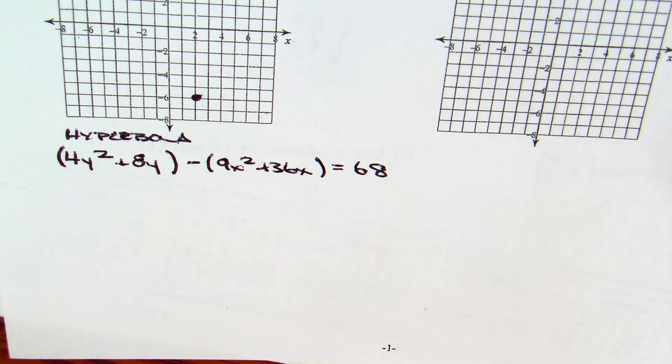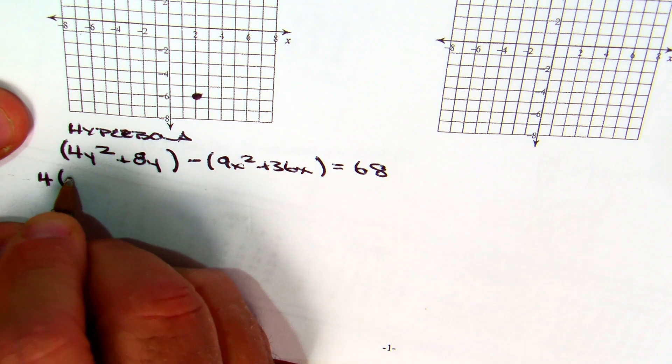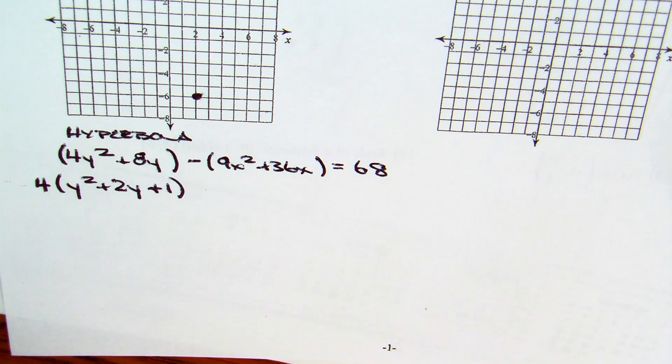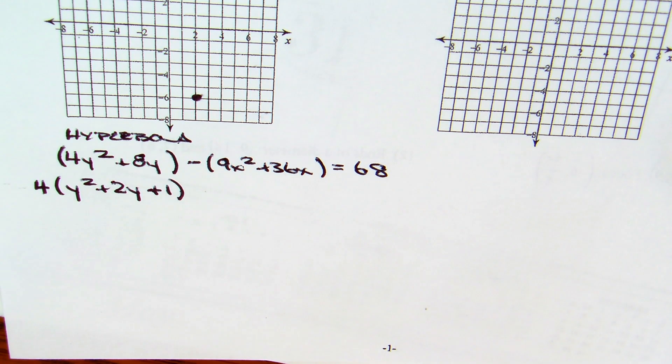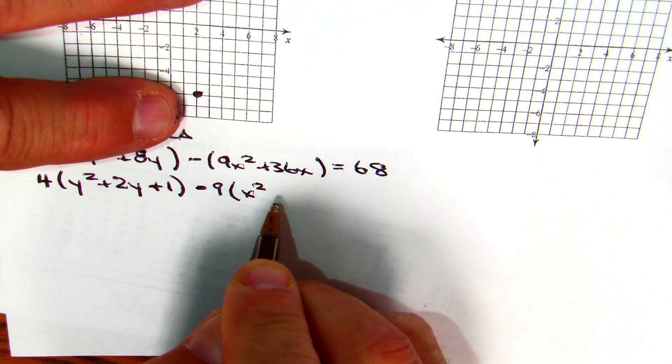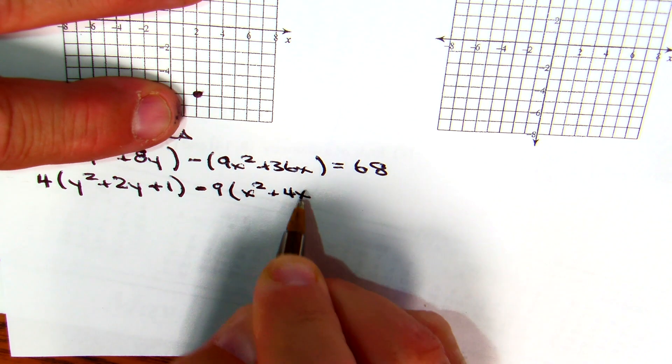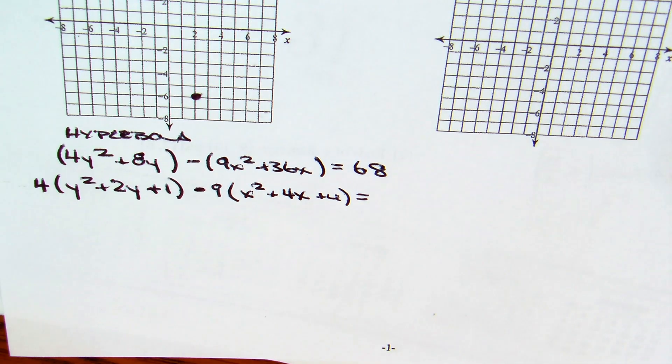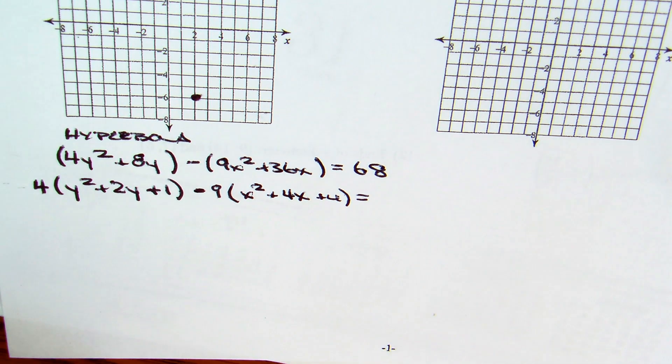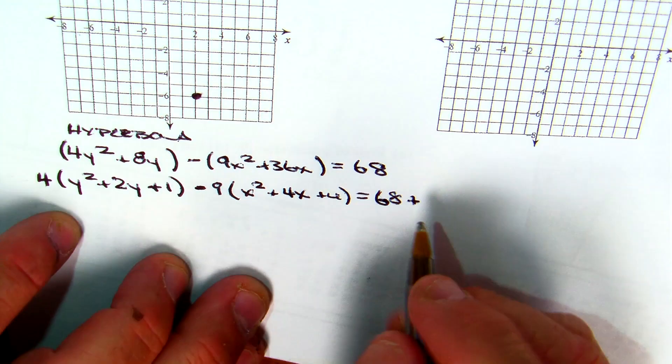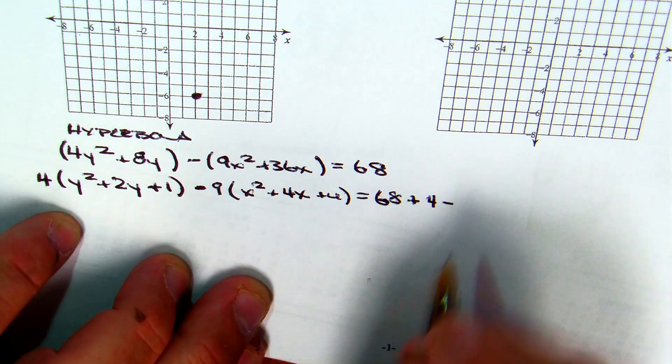What's the coefficient of y squared? 4. So, I'm pulling it out. y squared plus 2y plus 1 when I complete the square. Minus 9x squared. Plus 4x plus 4 equals 68 plus what? 4 minus what? 36. Good.